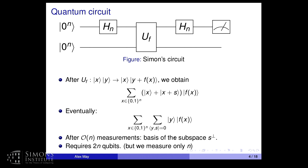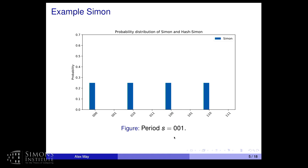Here is the algorithm in action. The period is shown, and whenever we measure, we get a vector orthogonal to the period. These vectors are all orthogonal, and we get a uniform superposition — each measured with probability one over four. We collect measurements until we have enough linearly independent vectors.